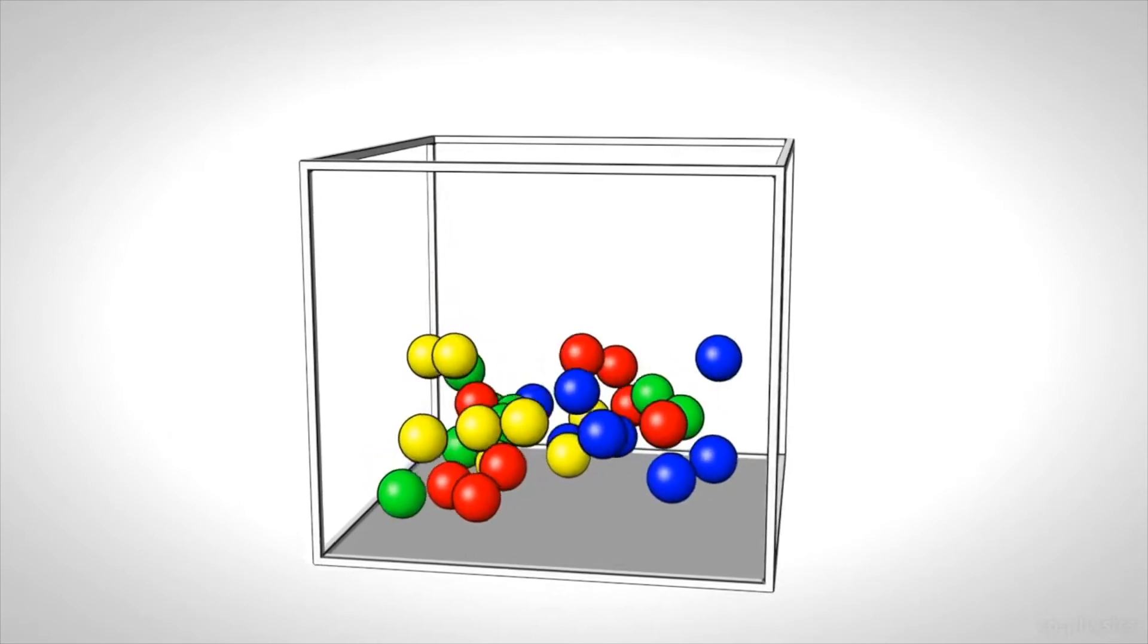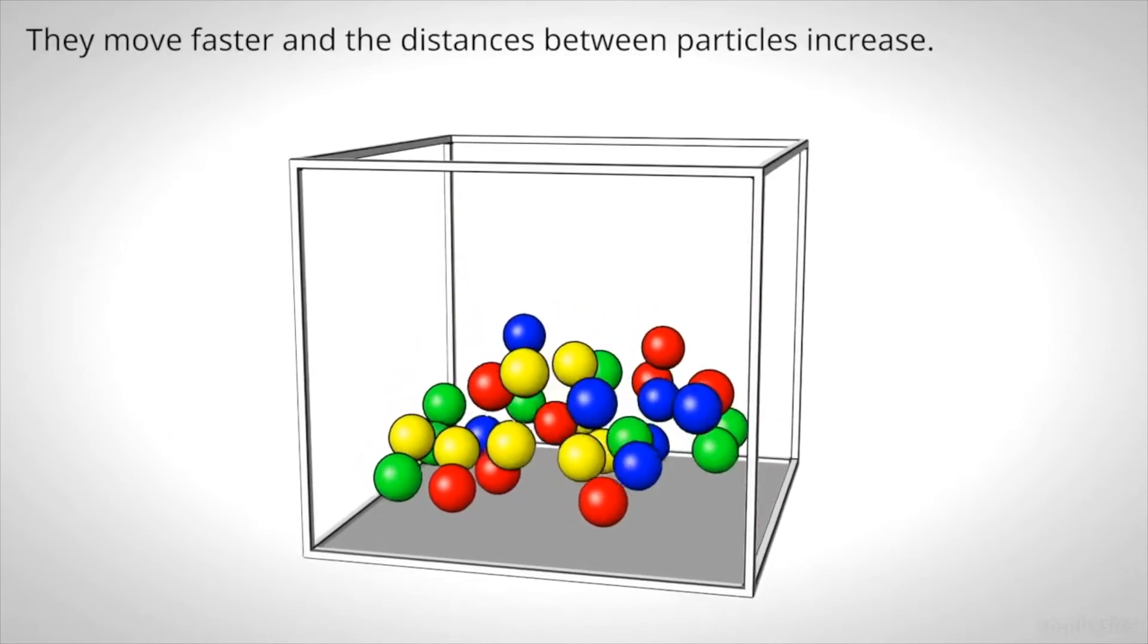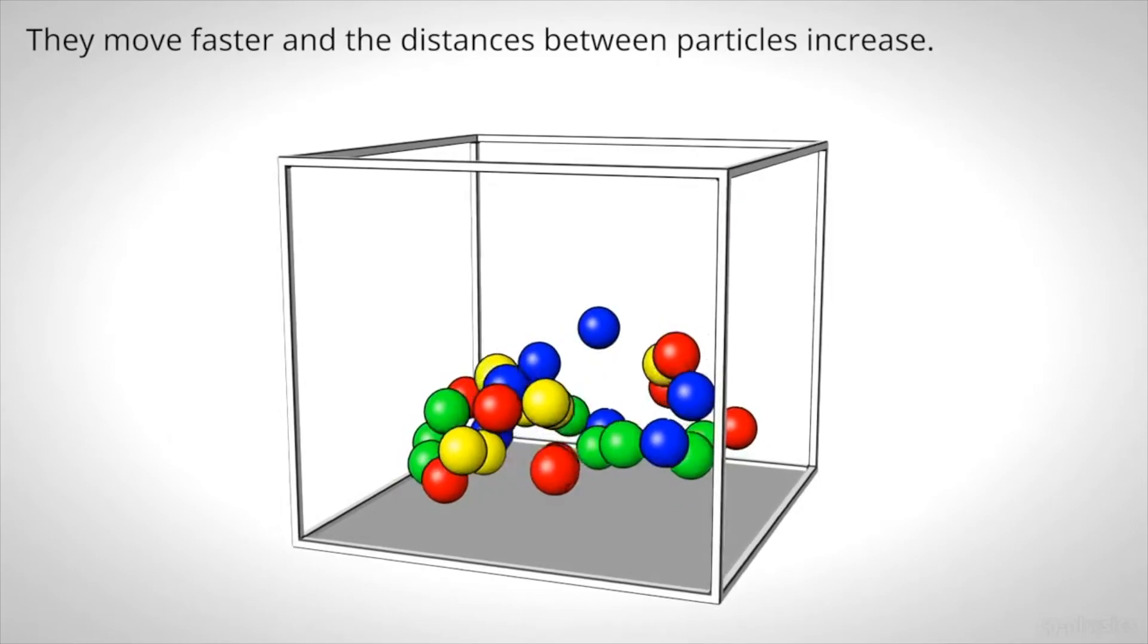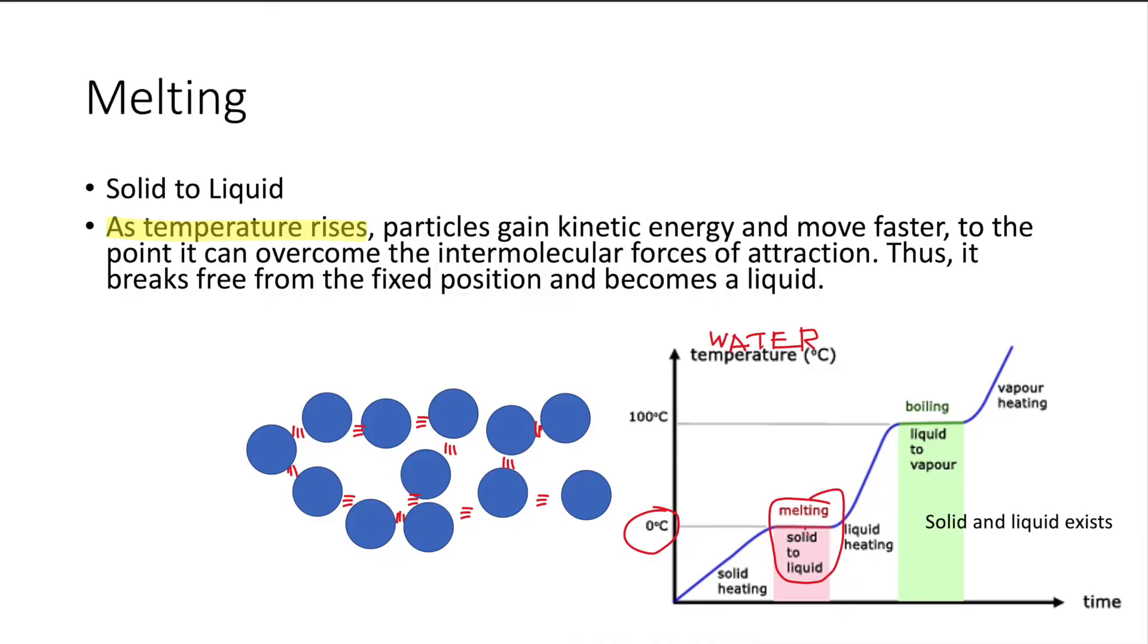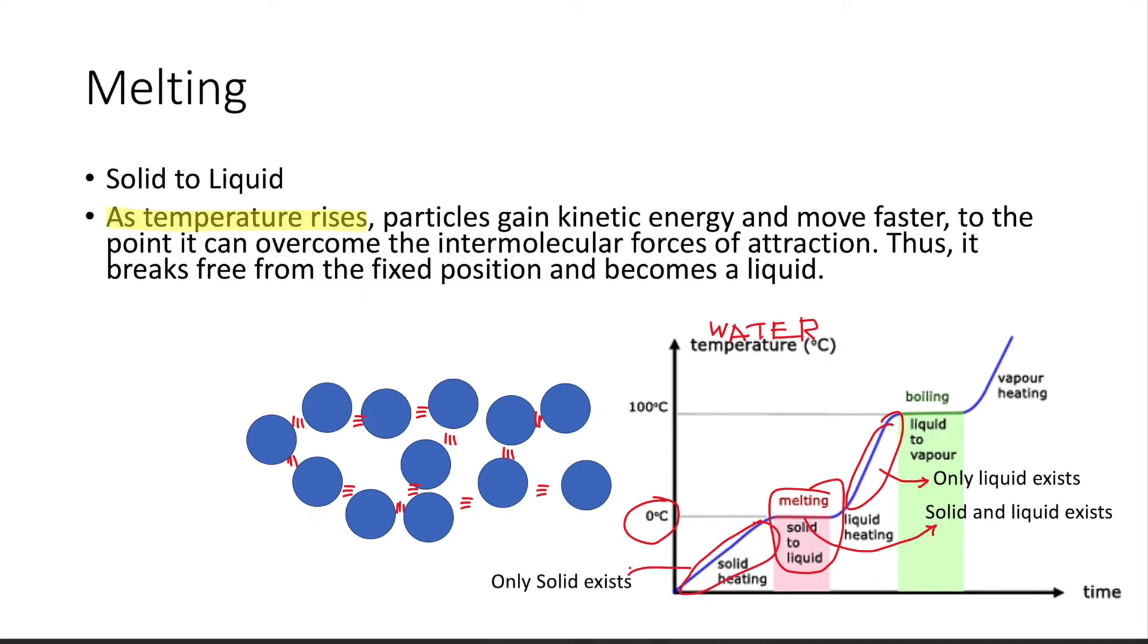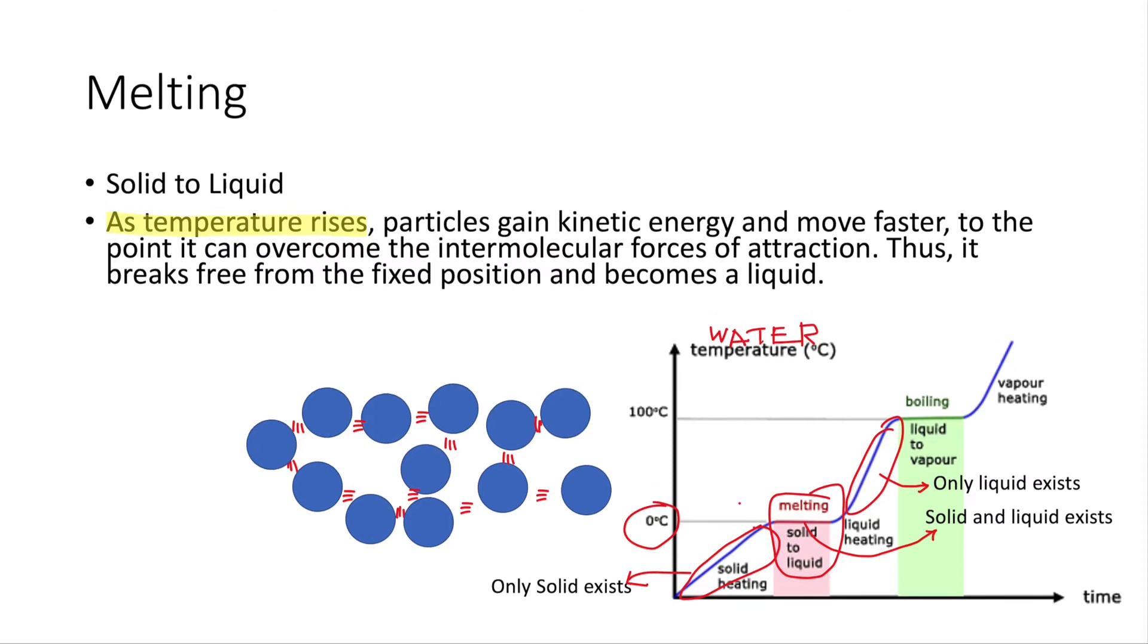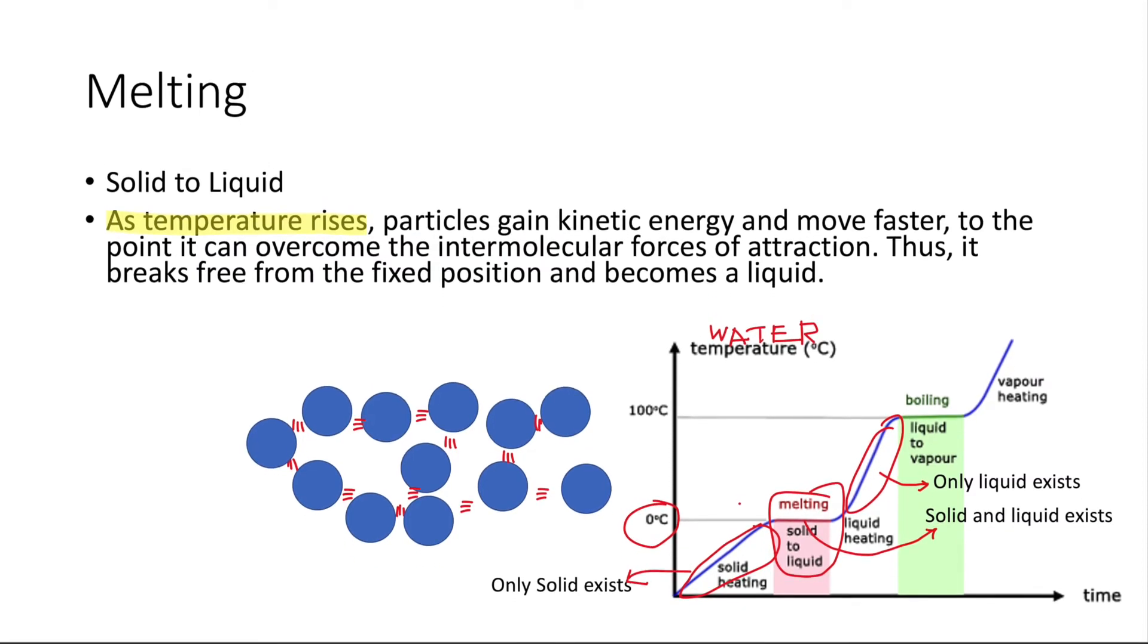You may know that melting occurs at a fixed point called the melting point. Usually for water it'll be at zero, and at this point there will be a mixture of solid and liquid particles because all the energy that is being supplied is currently being uptaken by the particles to break away from each other. There are intermolecular forces of attraction. This portion contains only solid, this portion contains only liquid.